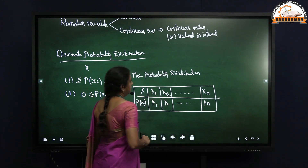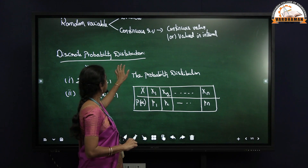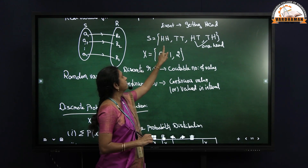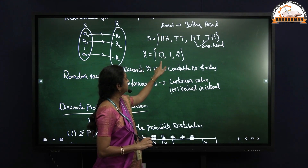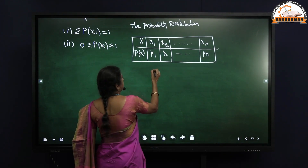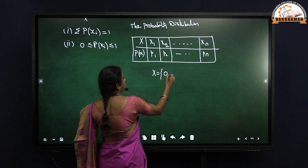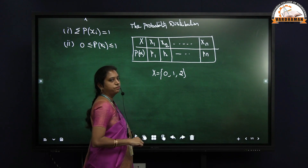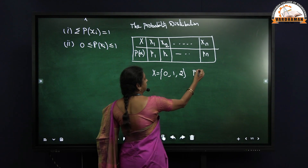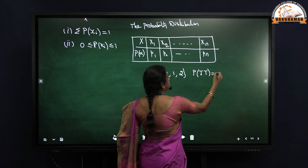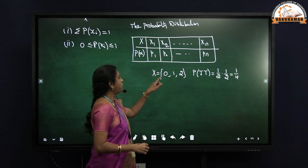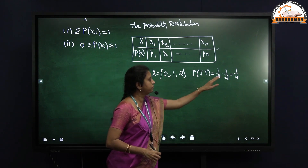If we take the same coin-toss example, we have the random variable X as 0, 1, and 2. Now we find the corresponding probability values. X = 0 is when two tails occur. Probability that two tails occur is 1/2 × 1/2 = 1/4. So the probability value corresponding to X = 0 is 1/4.